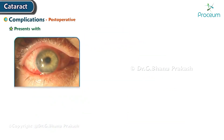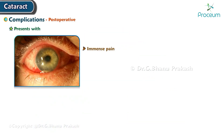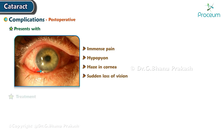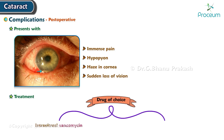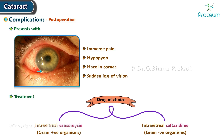The patient with endophthalmitis presents with immense pain, hypopyon, haze in the cornea, and sudden loss of vision. Treatment — drug of choice: intravitreal vancomycin for gram-positive organisms, and intravitreal ceftazidime for gram-negative organisms.